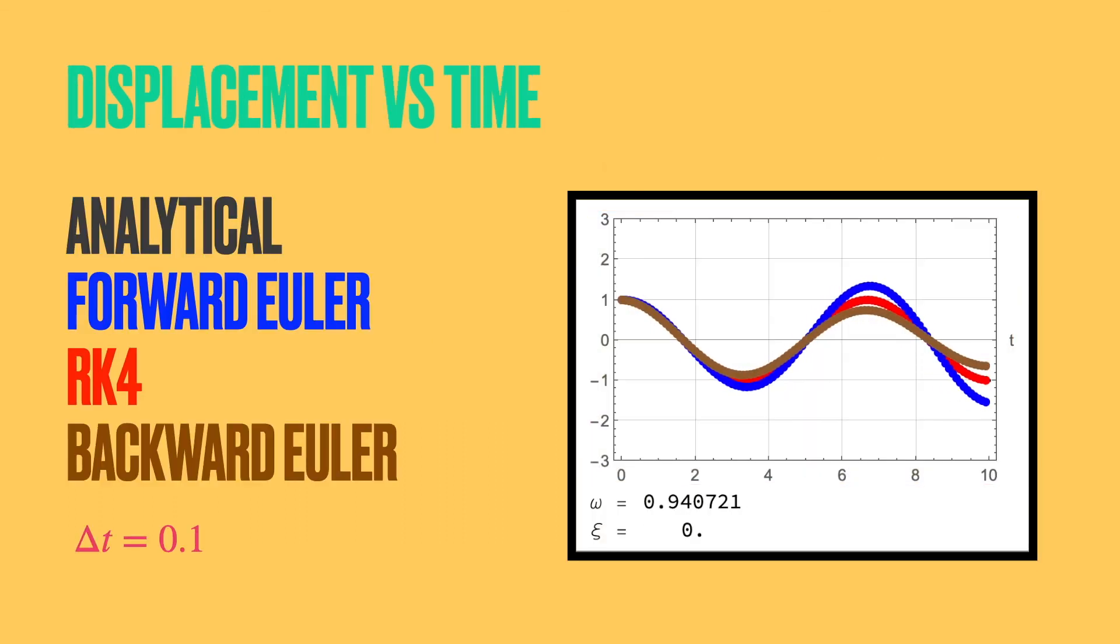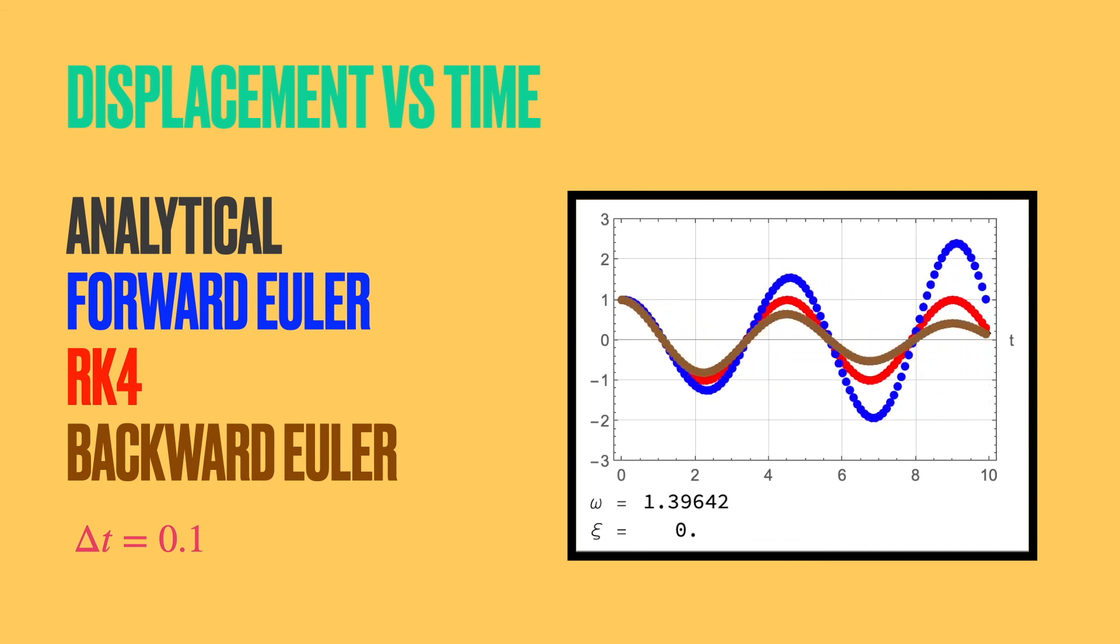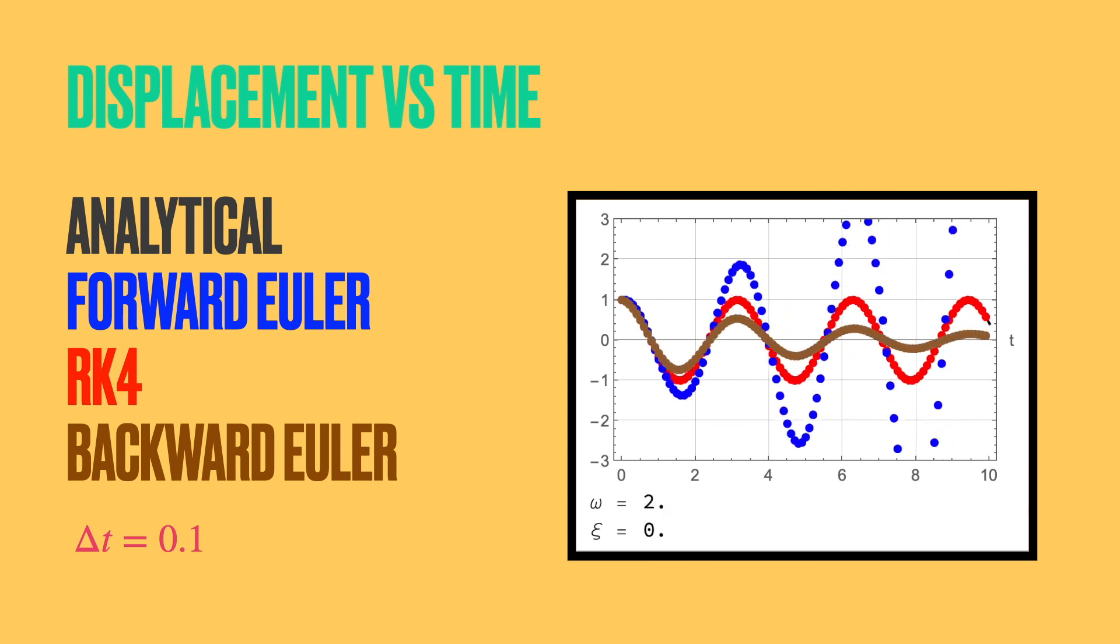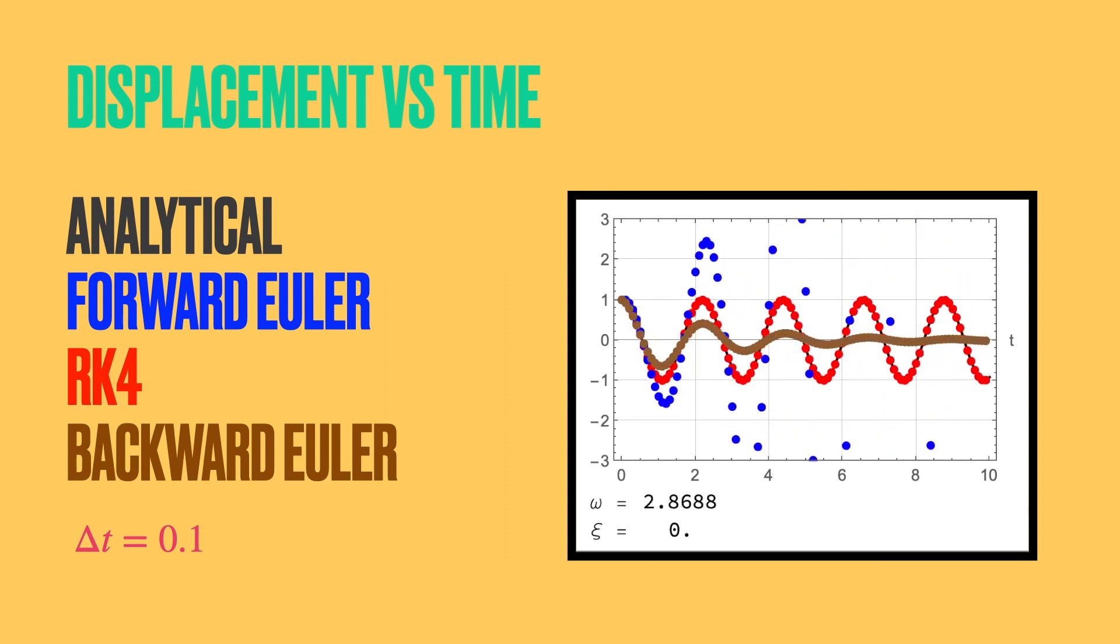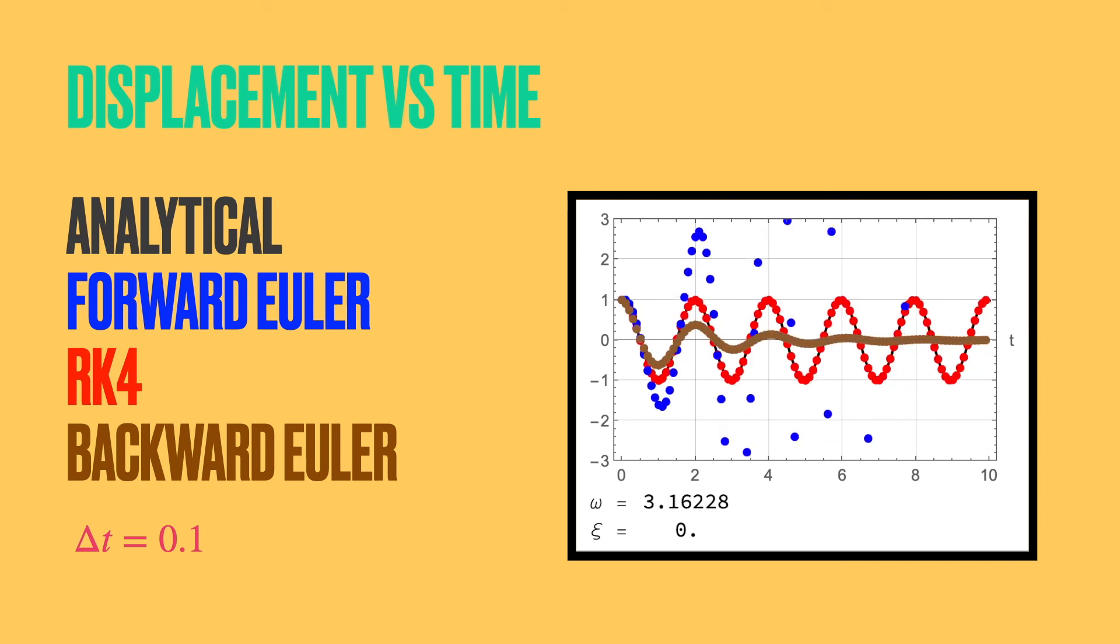Here, on the right-hand side is shown the displacement as a function of time. Shown also are the four methods, the analytical solution in black, the forward Euler in blue, the RK4 method in red, and the backward Euler method in brown. The time step size here is 0.1.